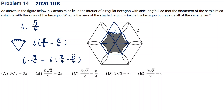If we simplify this, it becomes twelve times root three over four — but wait, this is pi over six — so minus pi, which simplifies to three root three minus pi.